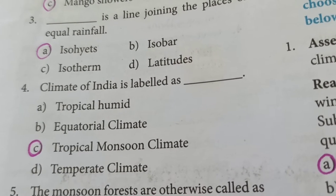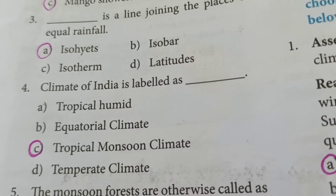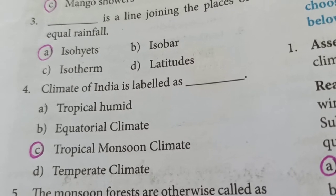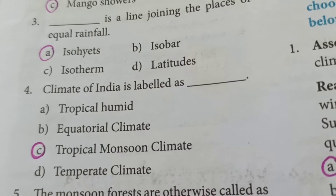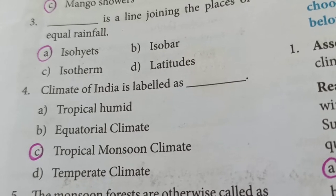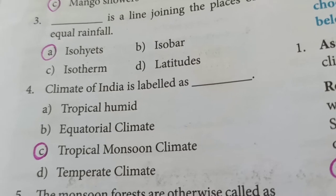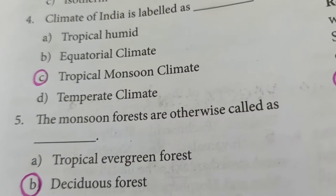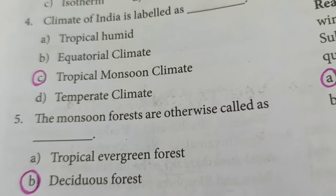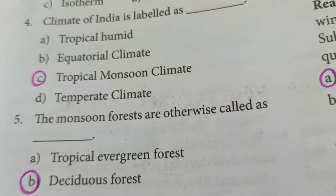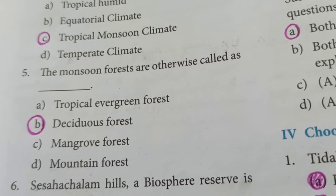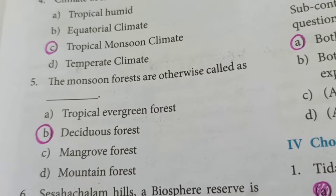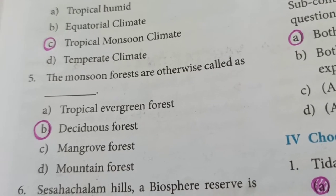The answer is tropical monsoon climate. India is located in the tropical zone and it is influenced by the monsoon winds, so India experiences tropical monsoon climate. Fifth question: The monsoon forests are otherwise called as dash. The answer is deciduous forests.